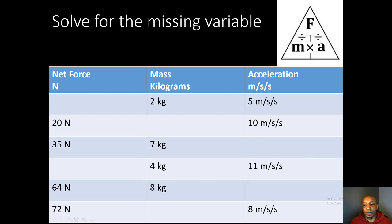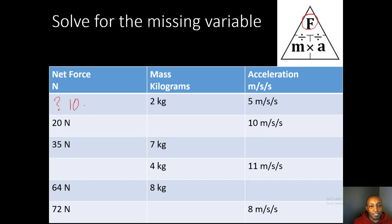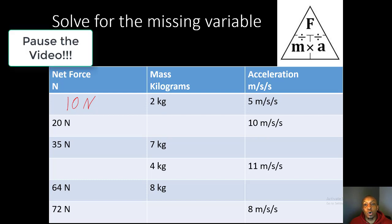Now let's solve some problems for the missing variable. In the first problem, we don't know the net force, so we put a question mark. Our mass is 2 kilograms and our acceleration is 5 meters per second squared. Solving for force: force equals mass times acceleration, so 2 kilograms times 5 meters per second squared gives us a force of 10 Newtons. Go ahead and finish the rest of the problems — I'll give you four minutes and walk around to help.